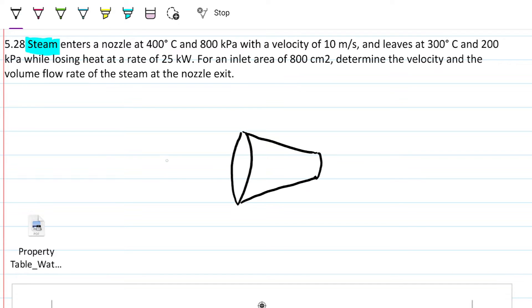We are entering at 10 meters per second with a set of properties that are 800 kilopascals and 400 degrees Celsius. And we're leaving this nozzle at 300 degrees Celsius and 200 kilopascals. Note that the steam entering this nozzle has a higher internal energy - the molecules have more energy than the ones that are leaving.